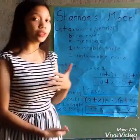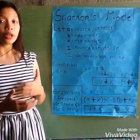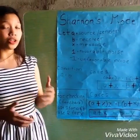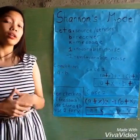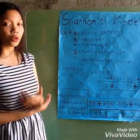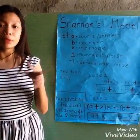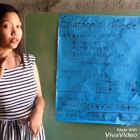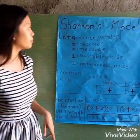Shannon's model starts with a sender using its encoder, and the receiver will receive it using its decoder. But in between them, there is noise in the channel.